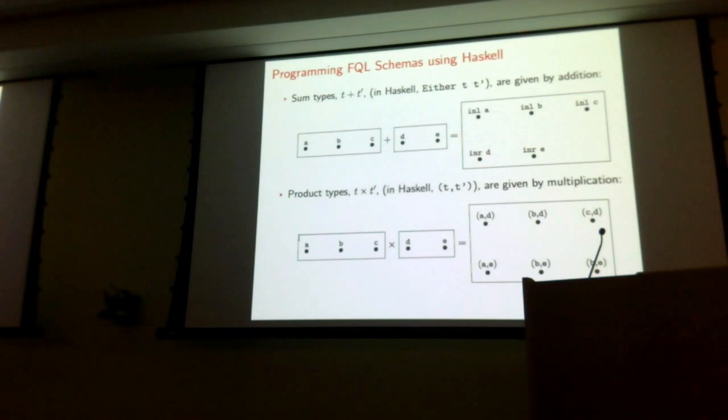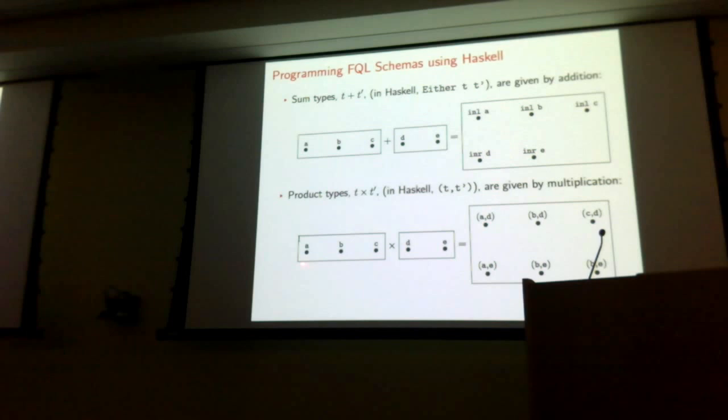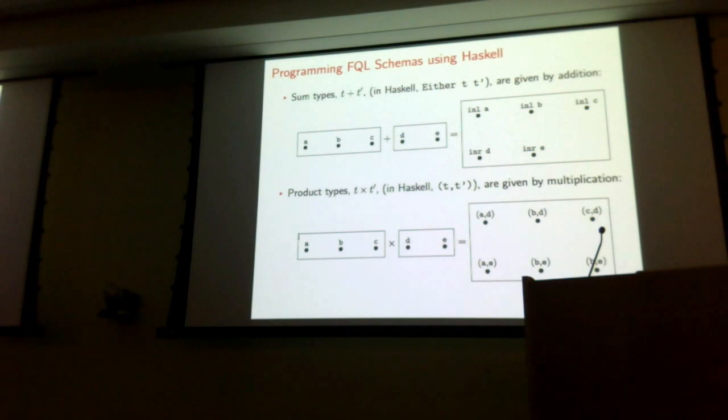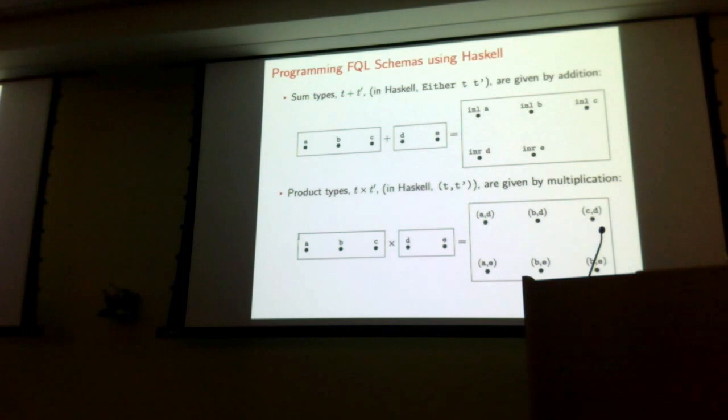How do product types work? I take the product of a schema of three nodes and a schema of two nodes. The resulting nodes are pairs of nodes — one node from the schema on the left and one from the right — so there are six nodes total. In this particular diagram I haven't drawn any foreign keys or path equality constraints, but if you have those in your schema then this construction extends straightforwardly.